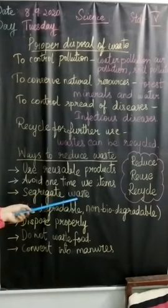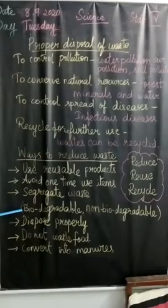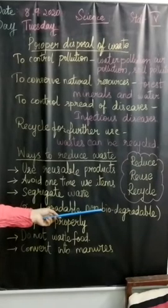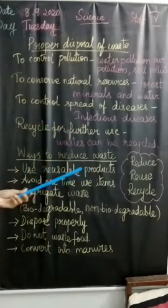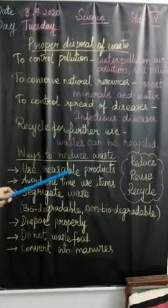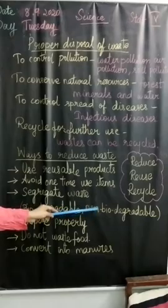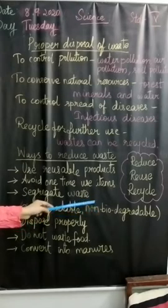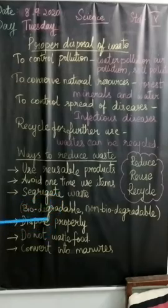Next, segregate waste. We should segregate waste into biodegradable and non-biodegradable. When we throw it to the municipality, the garbage collector brings different types of buckets — one for biodegradable and one for non-biodegradable waste. If we dispose waste accordingly, it will be used in a better way.